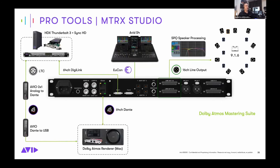Moving on to a slightly bigger system: if you don't need the full 128 tracks in some circumstances, you could have an external renderer. In this example, we have a 64-channel Dante connection to a Dolby Atmos renderer running on a separate Mac. Having the renderer on a separate computer gives you more confidence that the deliverables you create will be correct. This is also where speaker processing comes in — making sure your EQs and delays are set correctly. In most territories around the world, there are Dolby staff who can provide guidelines, as well as excellent information from companies like Netflix about what kind of room you should be working in for these contents.